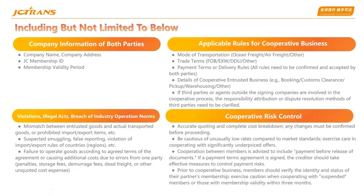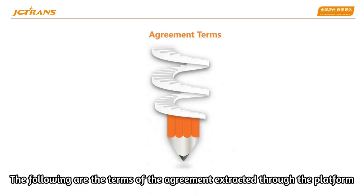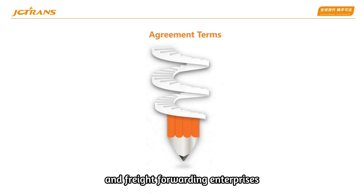Cooperative risk control: accurate and complete cost breakdown — any changes must be confirmed before proceeding. Be cautious of abnormally low pricing compared to market standards. Exercise care when cooperating with enterprises offering significantly low rates. Cooperation between members is advised to include payment before release of documents. If a payment terms agreement is signed, the creditor should take effective measures to control payment risks. Prior to cooperative business, members should verify the identity and membership status of their partner, and exercise caution when cooperating with suspended members or those with membership validity within three months.